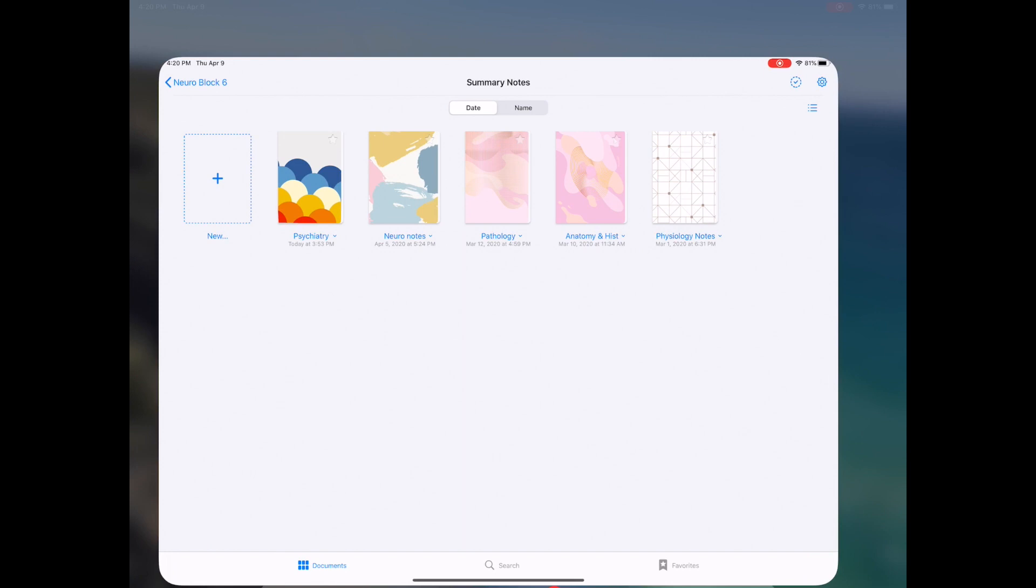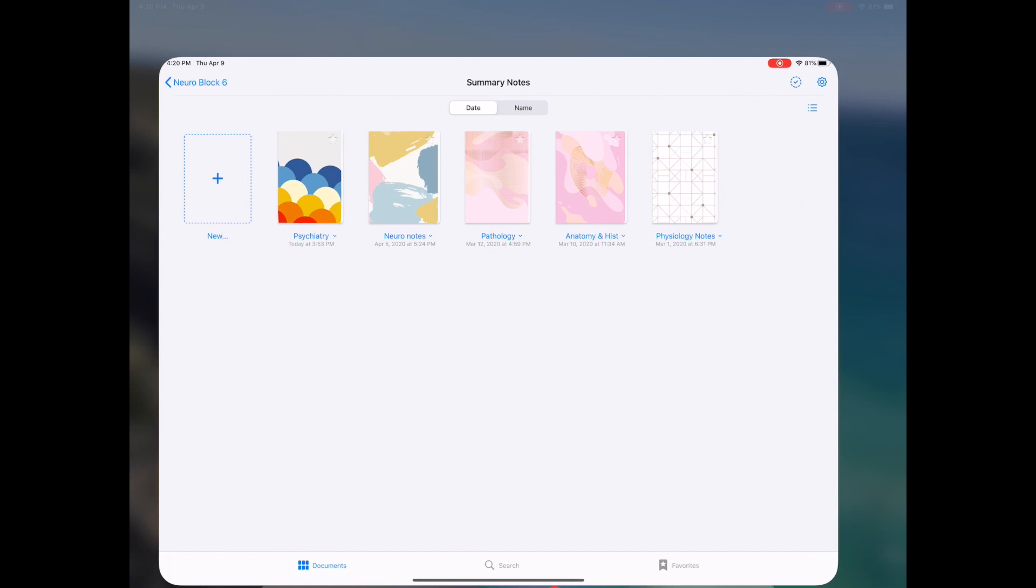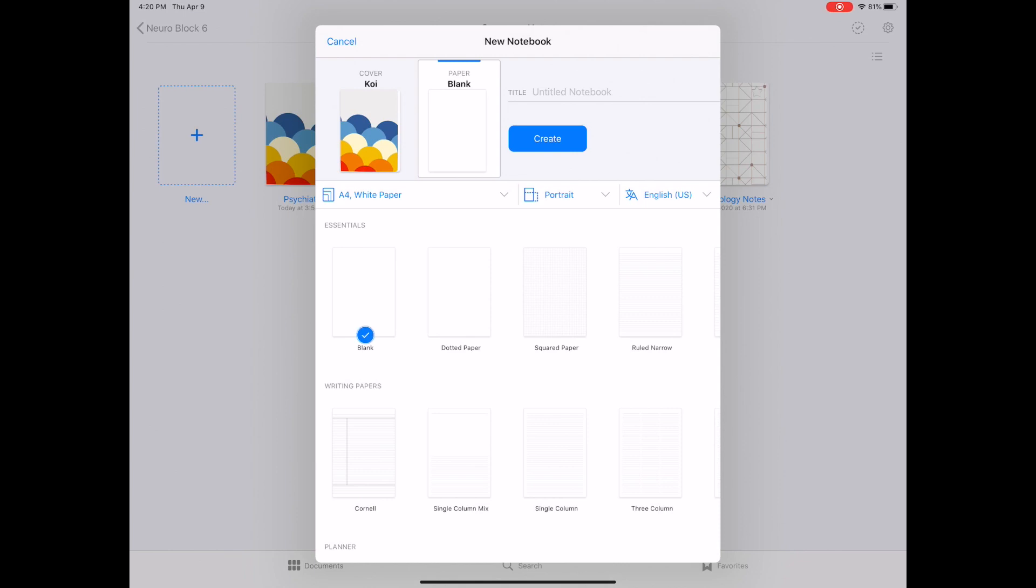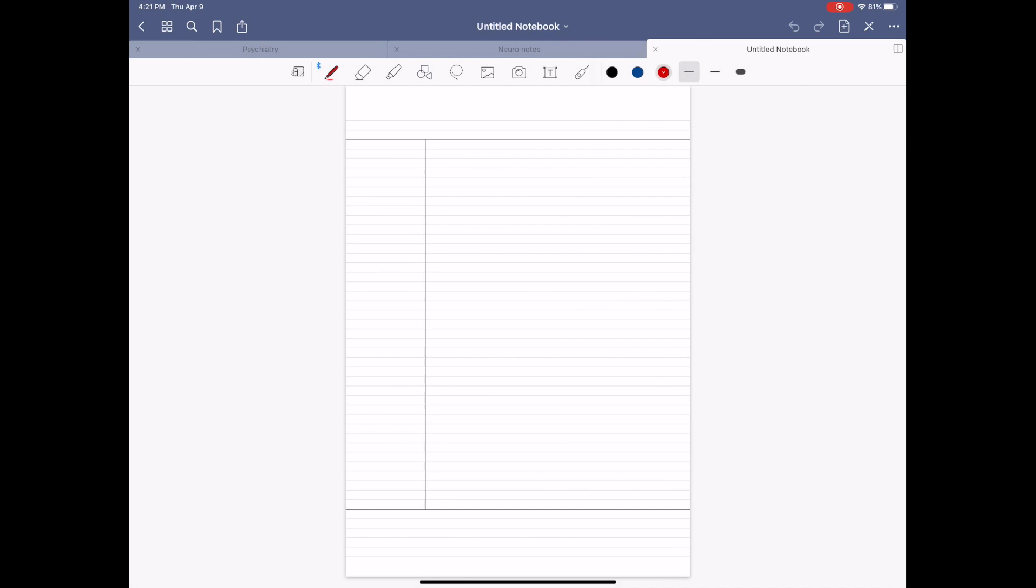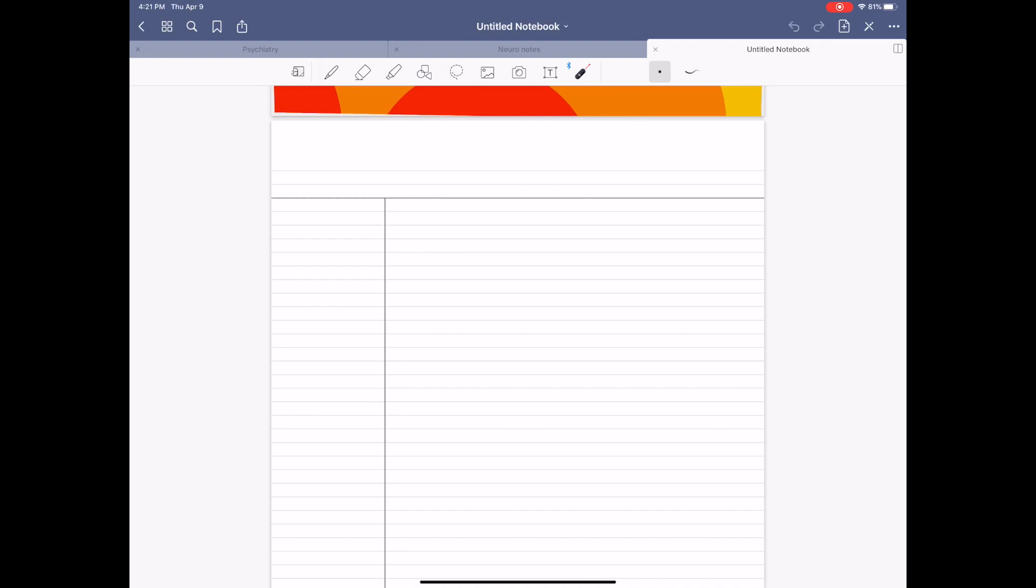Alright, so the second step is to open up GoodNotes 5 on your iPad, and create a new notebook. You can choose here from several different templates, but I always like to choose the Cornell template. So click Create, and as you can see here, this is the Cornell template. So traditionally, the Cornell note-taking method was developed in the 1940s by a Cornell professor, and what he would do is divide your paper like this, and here, this is where the title goes, this is where the timestamp goes, and here on this small column is where you would write either questions or cues, and then here would be your answer to that question or the main body of your notes.